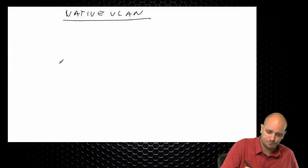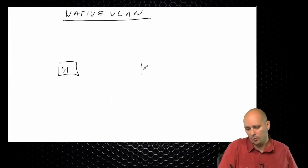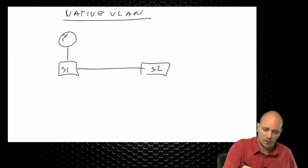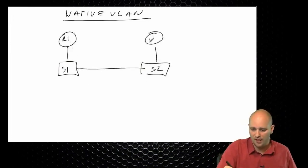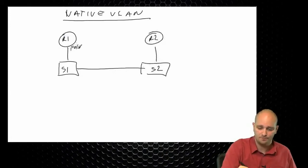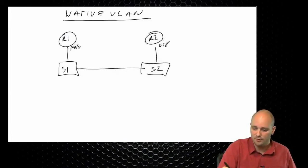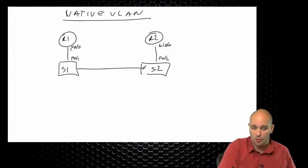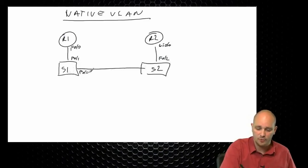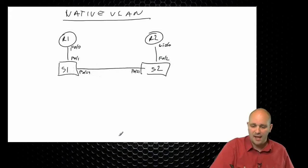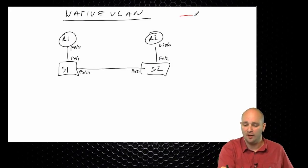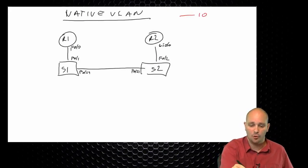Let's say that we have Switch 1 and Switch 2. To Switch 1 we have R1 connected, and to Switch 2 we have R2 connected. This is FastEthernet 0/0, GigabitEthernet 0/0, FastEthernet 0/1, and FastEthernet 0/2. Between Switch 1 and Switch 2 we already have an interface which is FastEthernet 24. I'm going to build two VLANs between R1 and R2: a red VLAN which is VLAN 10, and a blue VLAN which is VLAN 20.